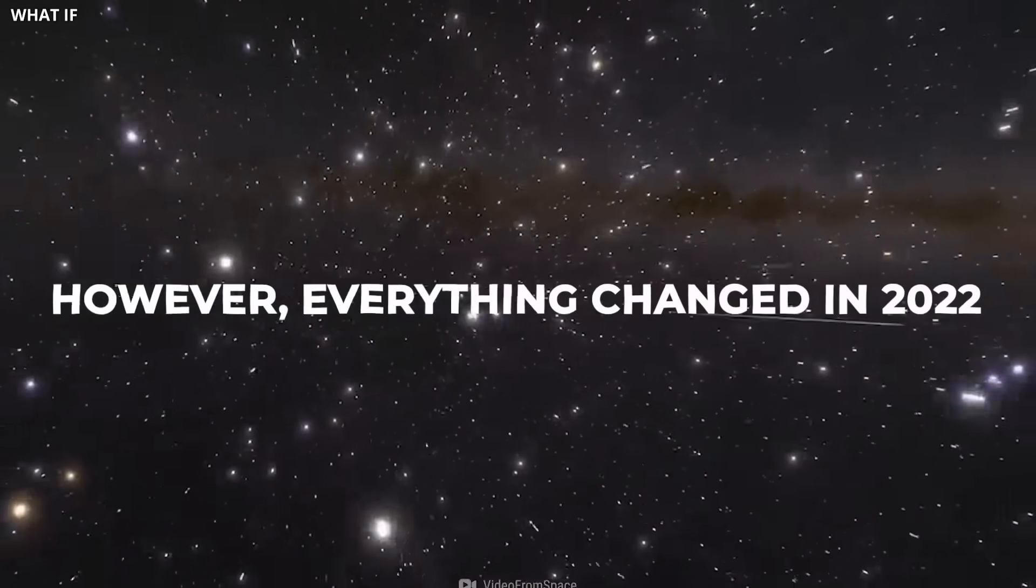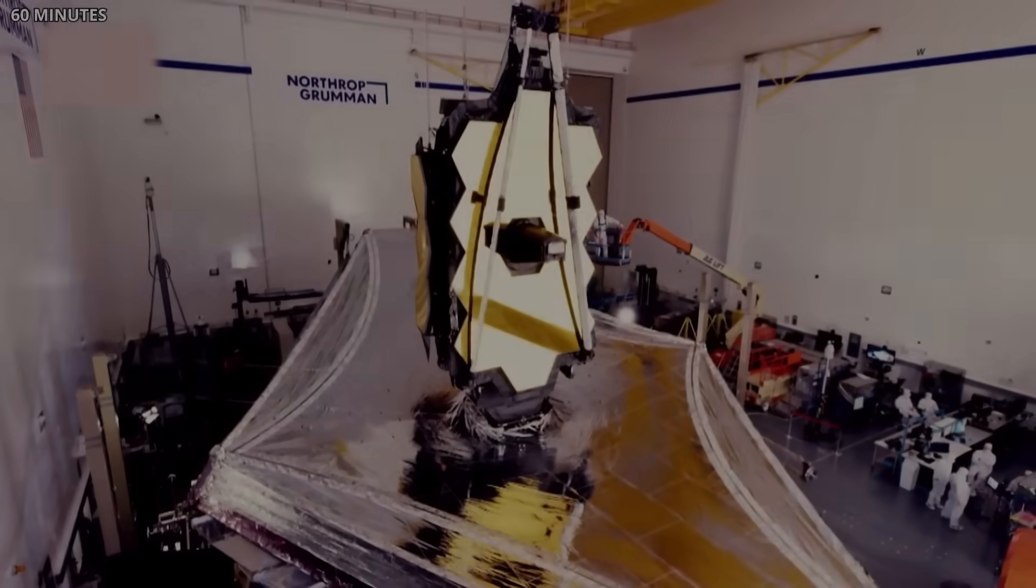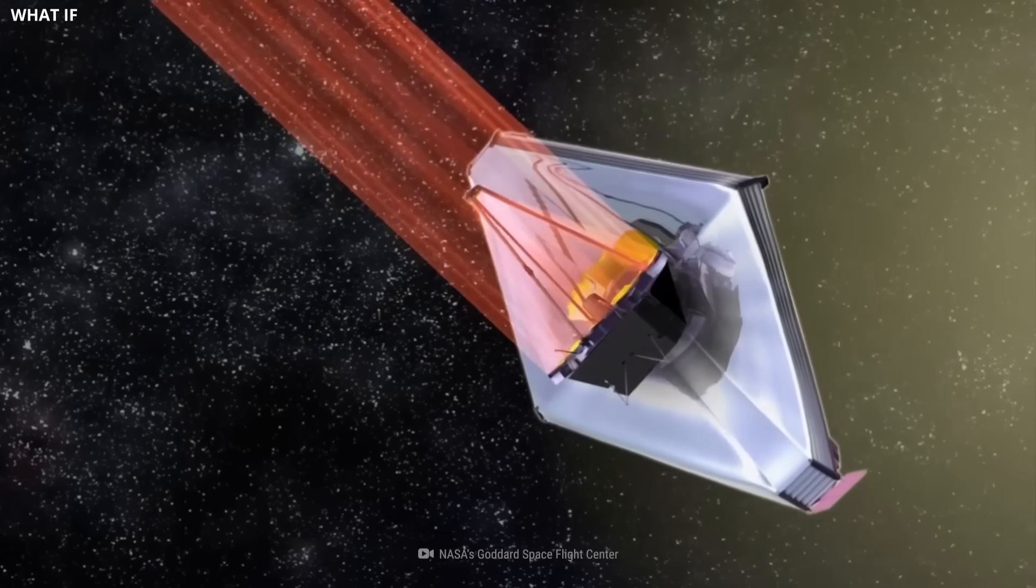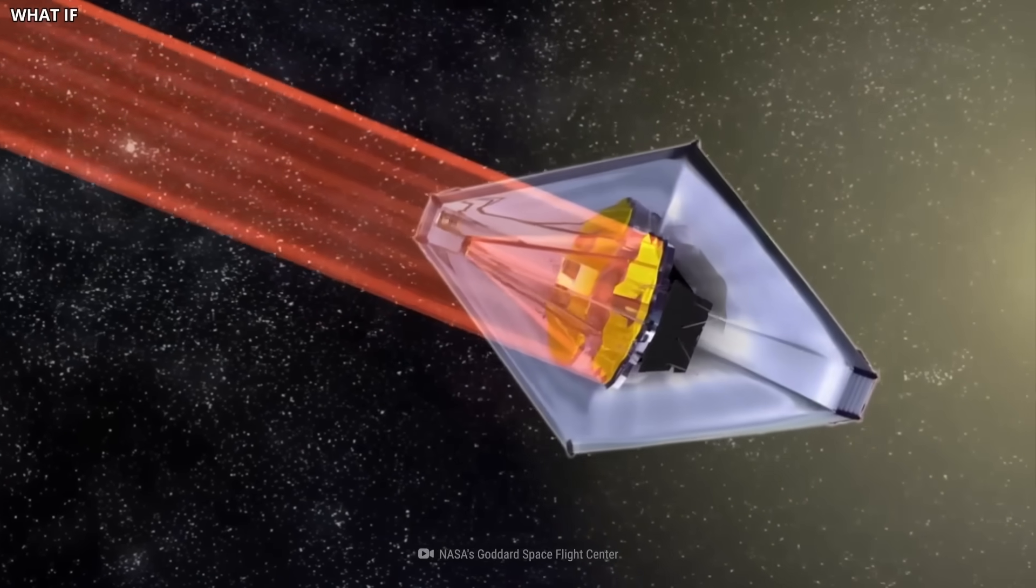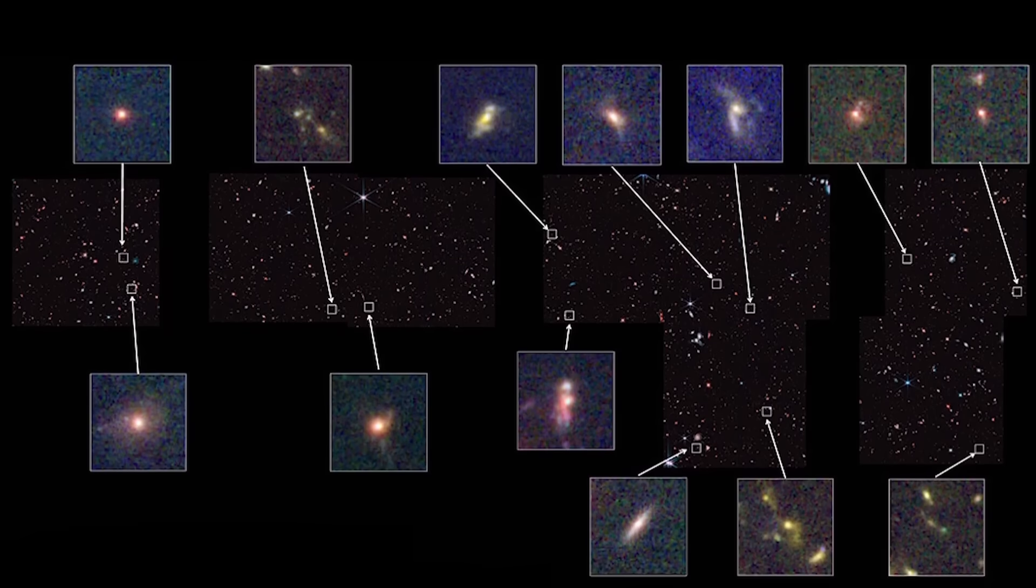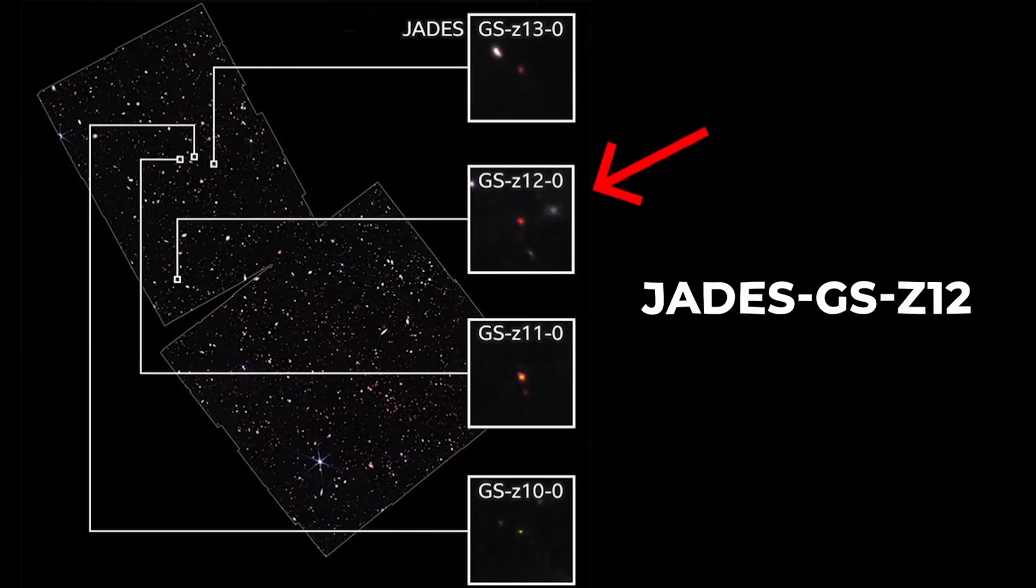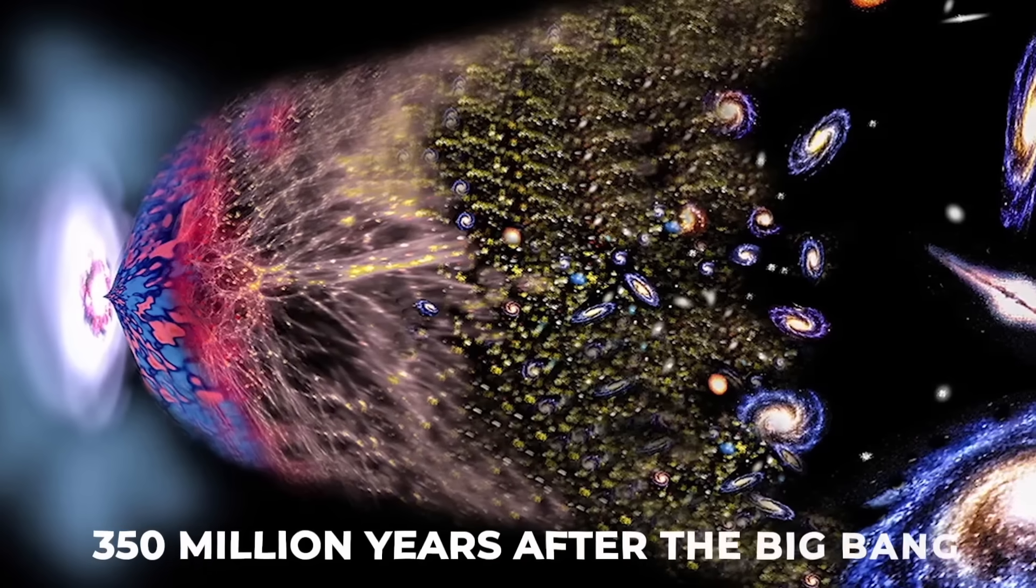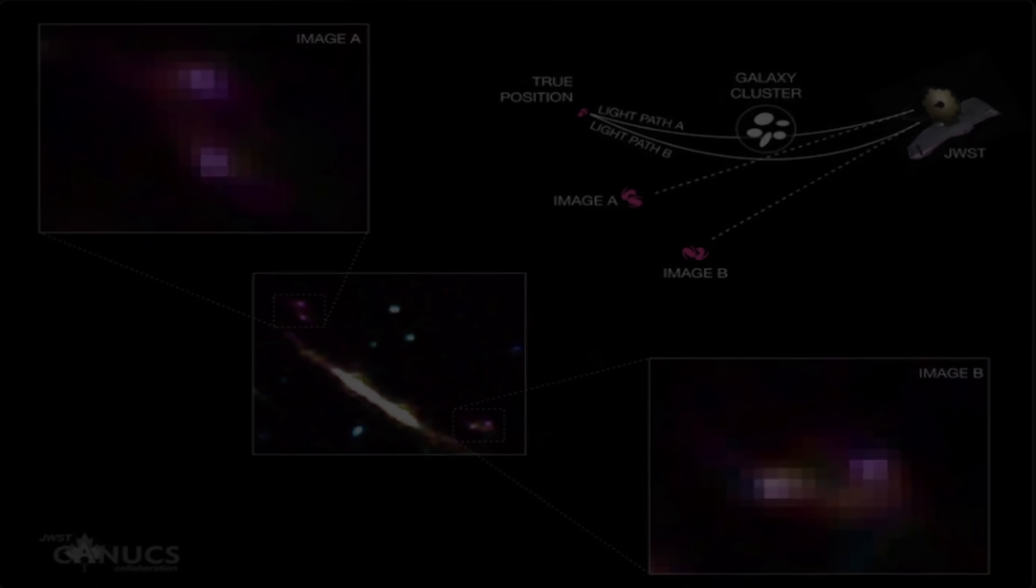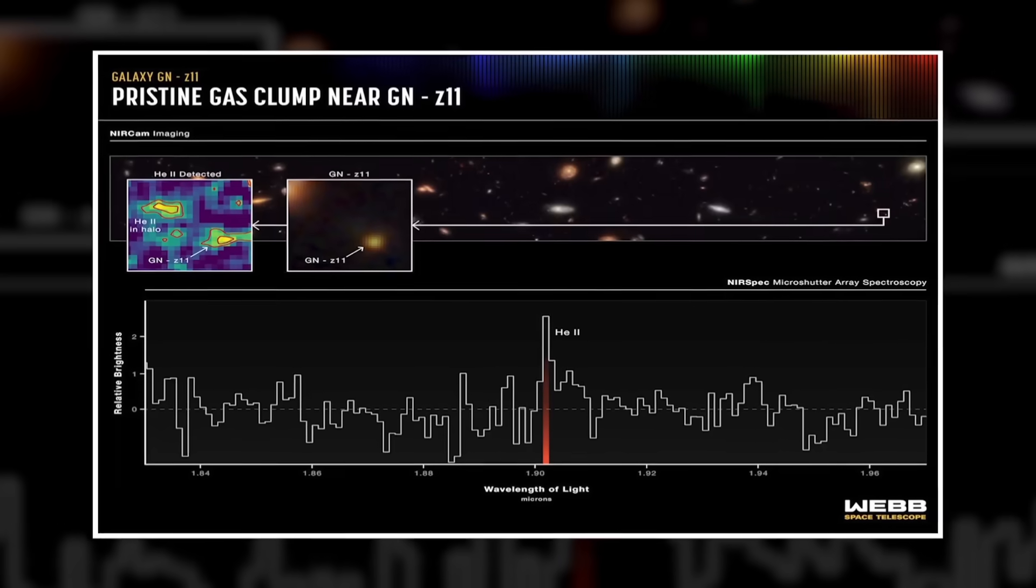However, everything changed in 2022, when the James Webb Space Telescope started its science operations. Designed to look deeper into space and further back in time than ever before, Webb quickly began revealing a flood of surprises. In its very first deep-field image, Webb detected several galaxies that broke previous records for distance and age. One of them, named Jade's GSZ-12, was found to have existed just 350 million years after the Big Bang, even earlier than GNZ 11. This discovery sent shockwaves through the astronomy community.